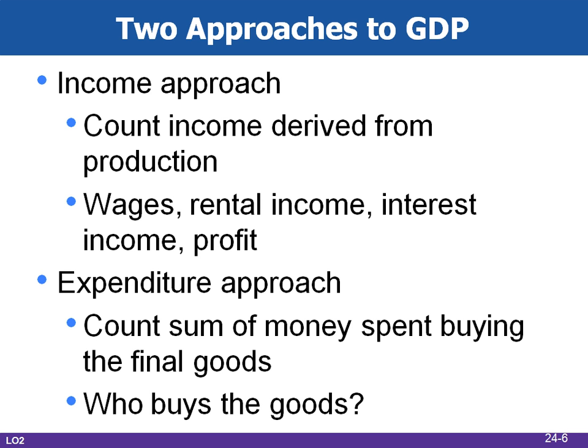This is also expressed in the circular flow of income that we looked at in earlier chapters, where producers purchase resources from households, and households use that income to purchase goods and services from firms.